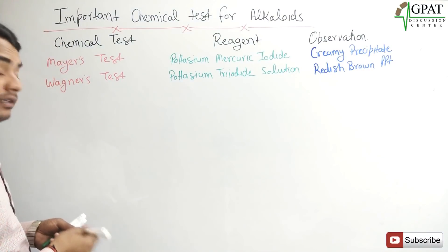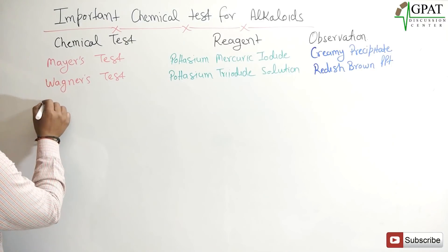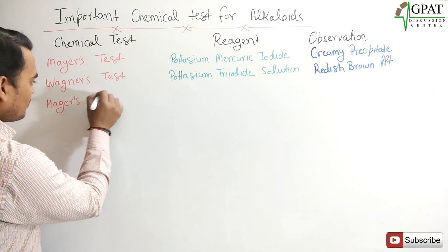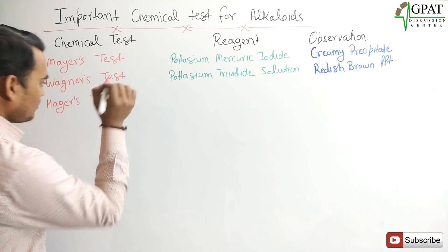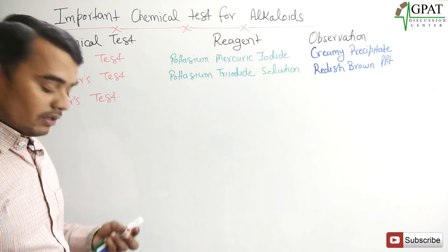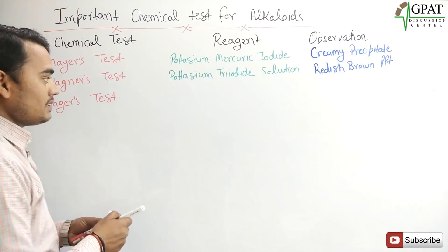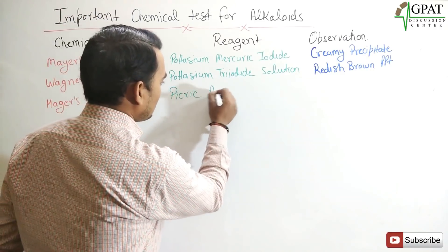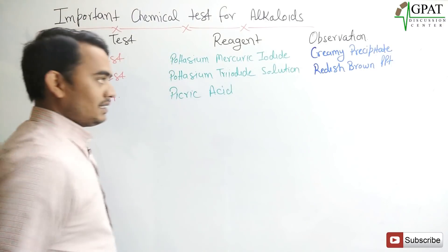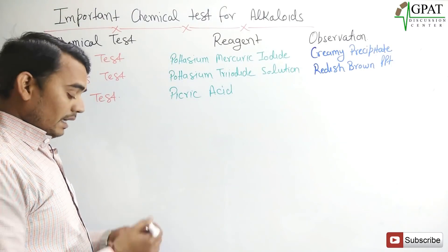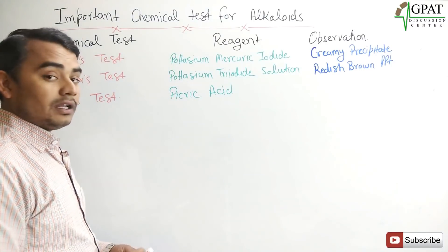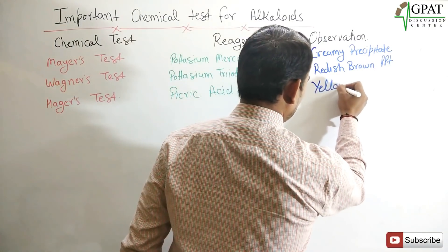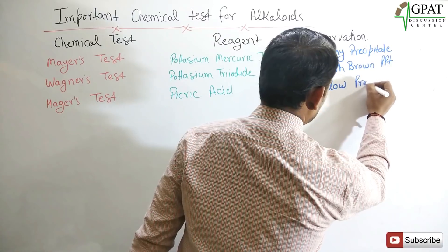Next is Hager's test. In Hager's test, the reagent used is picric acid. In the observation, we get a yellow precipitate.